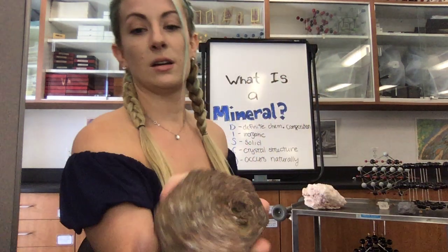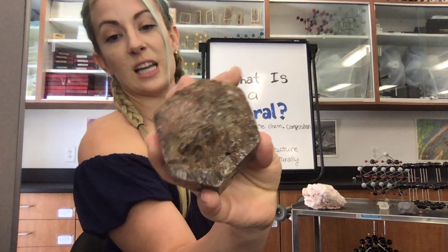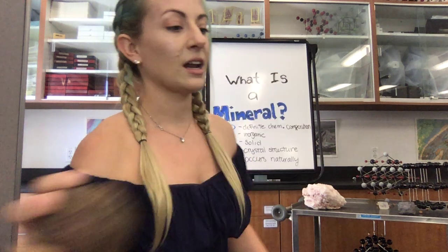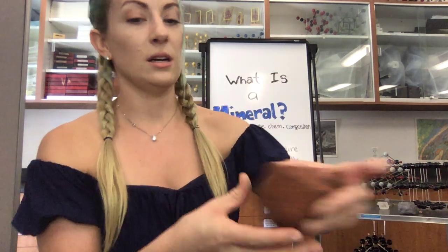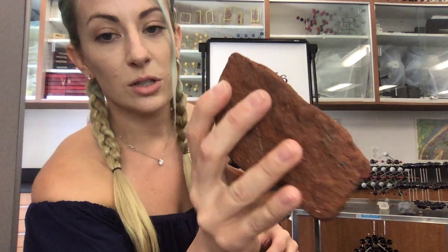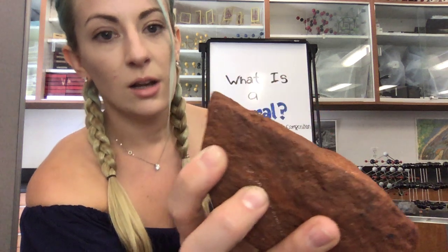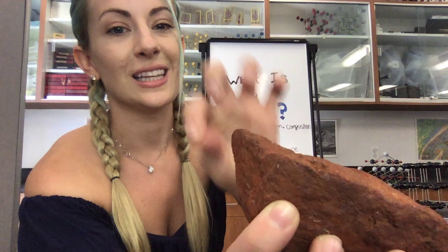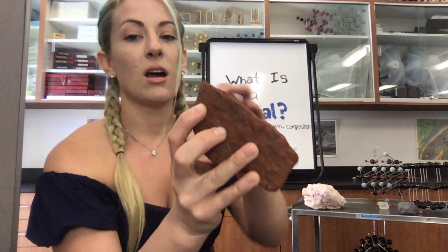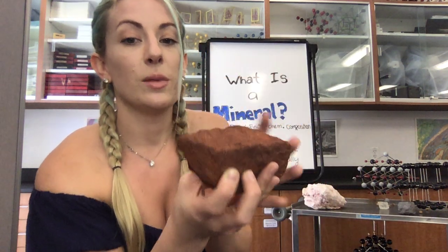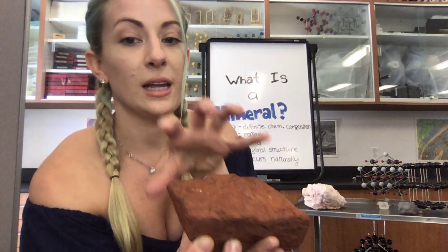Here we have an example of crystals that you can see with the naked eye. And this one you can't see directly, but if you were to zoom in with a super high-powered microscope or an electron microscope where you can see the atomic structure, you would see that every single point on this mineral has a repeating, predictable crystal structure.